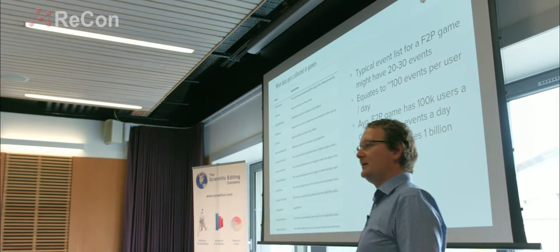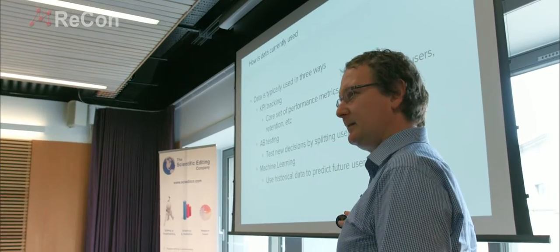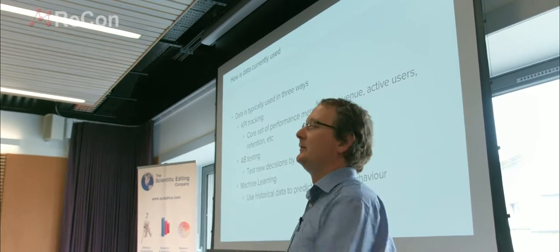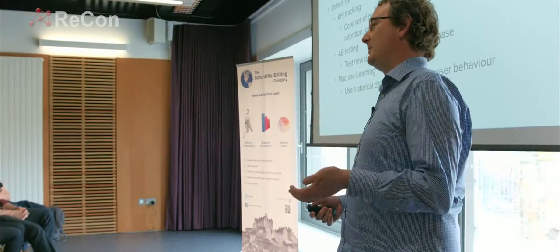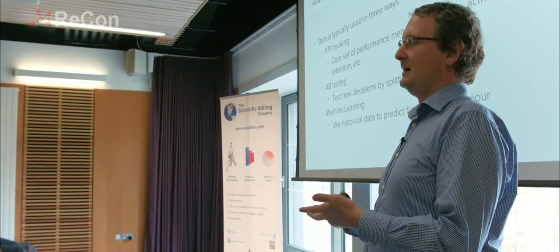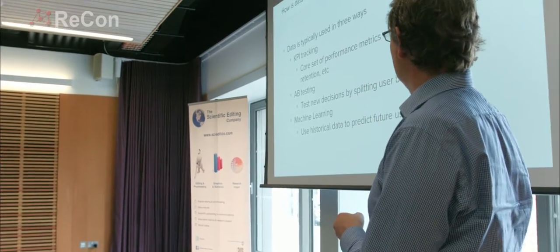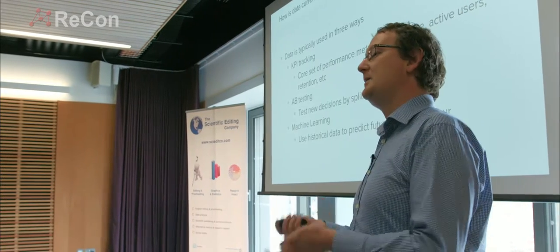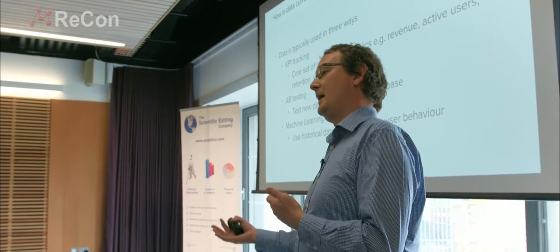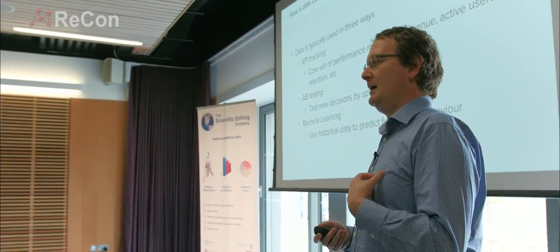You'd think with all this data there must be amazing things you can do with it, but what tends to be the case is that it's really only used for three things. First, people take all these millions of events and boil them down to four or five core numbers to tell how their business is going — things like how much money did I make today, how many users did I have. A slightly cleverer thing is A/B testing: build two versions of something, see which is more popular. And then there's some level of machine learning.